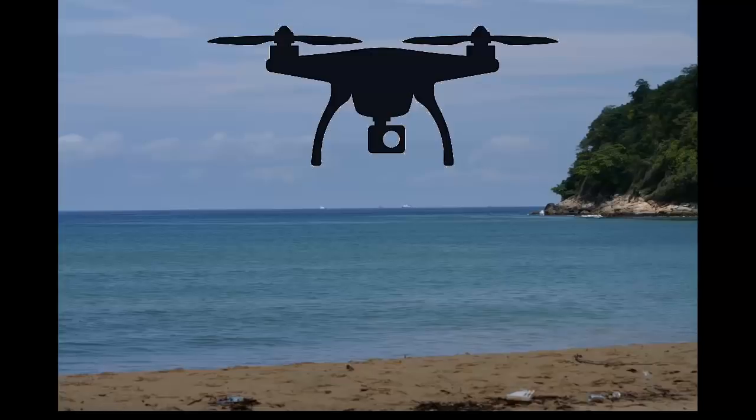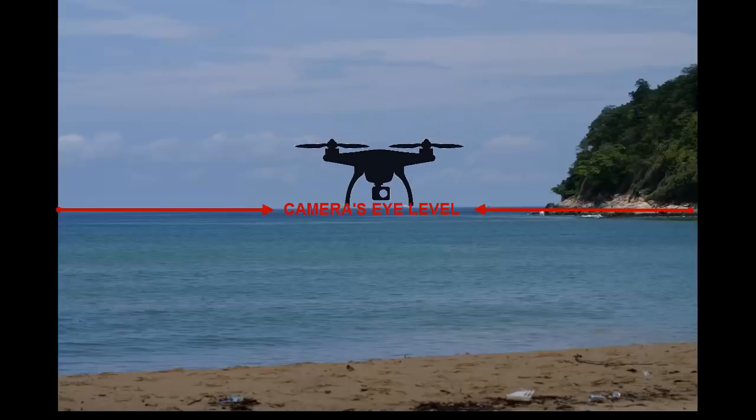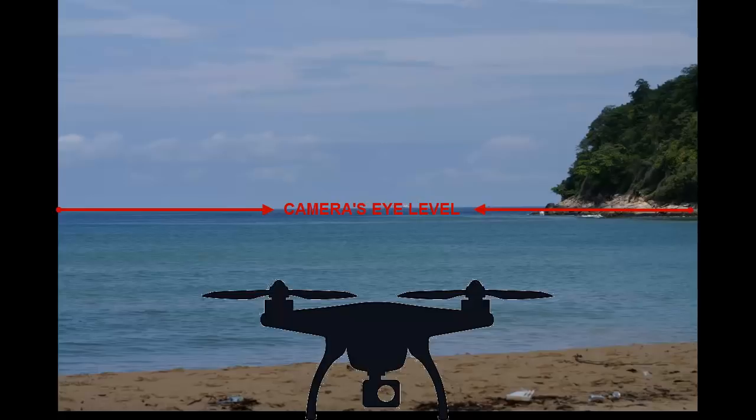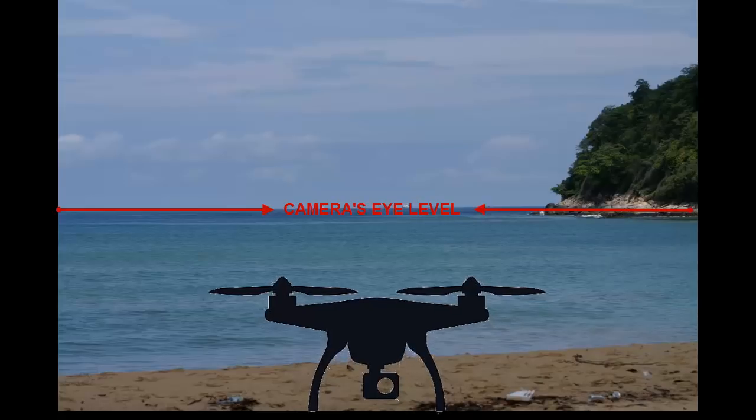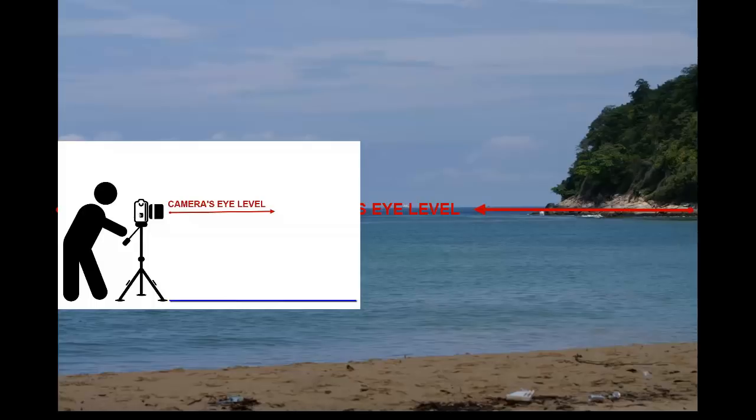As you can see, the horizon is at the camera's eye level. It's only when something is higher than our eye level and goes off into the distance does it appear to sink towards the horizon.